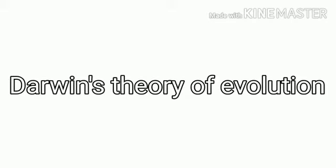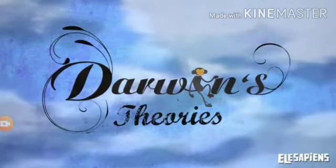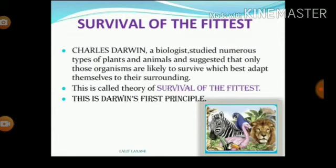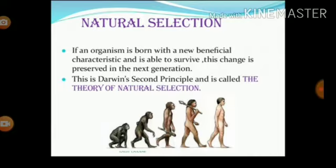Darwin's theory of evolution: Charles Darwin was a well-known evolutionary biologist. After observation of many plant and animal species, he suggested the theory of natural selection — survival of the fittest. Those organisms best adapted to a changing environment are likely to survive. If an organism is born with beneficial characteristics and is able to survive, these changes are preserved in the next generation. This is Darwin's second principle.